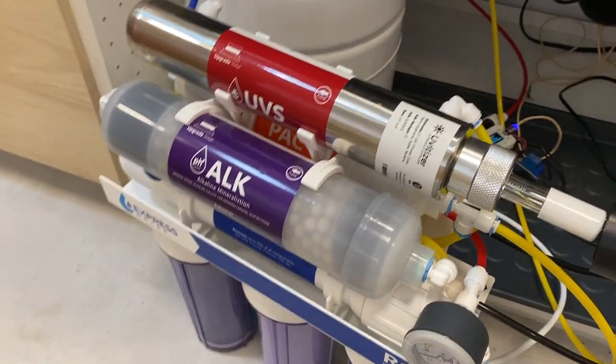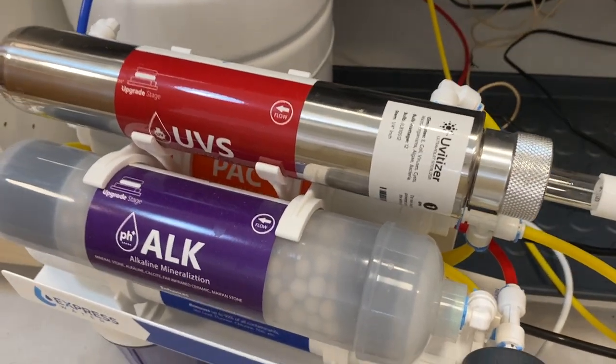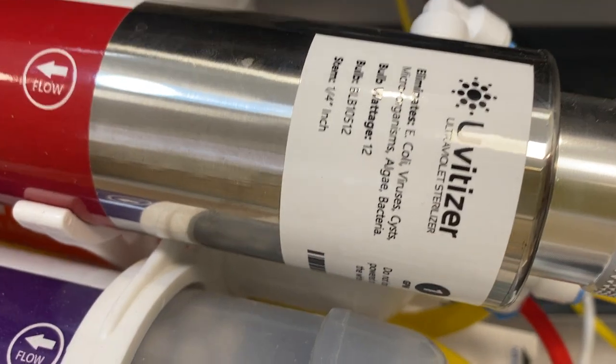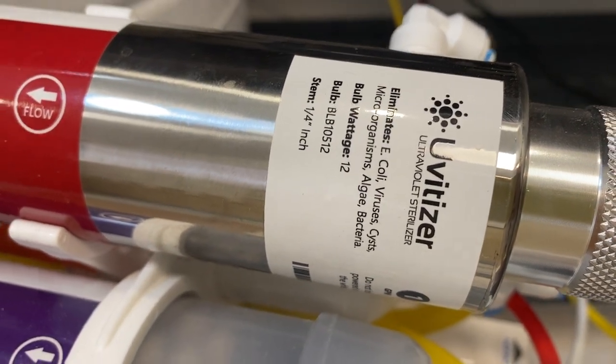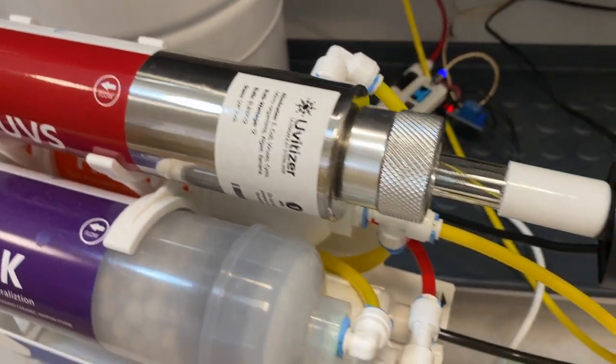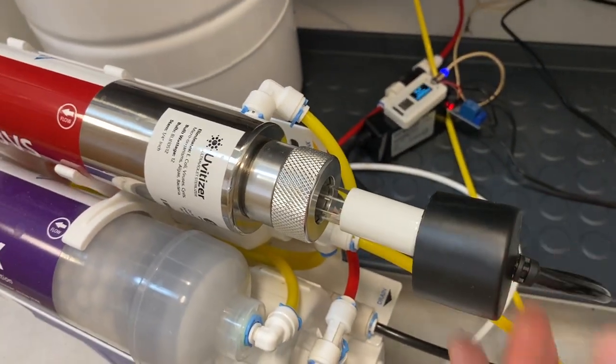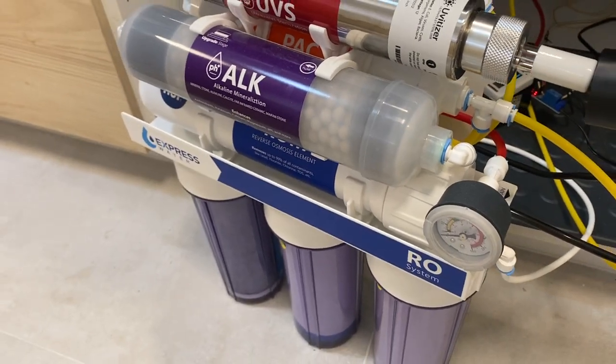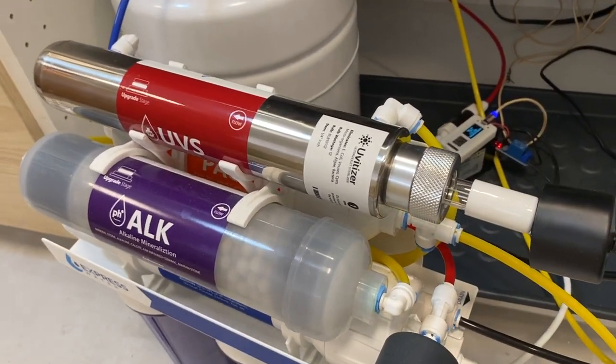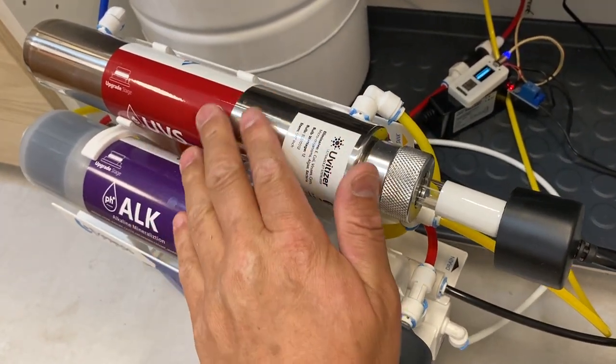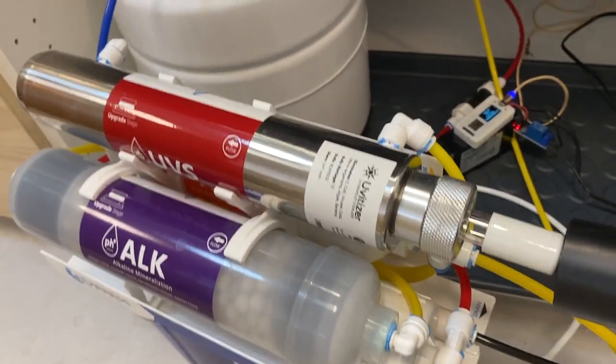It's called Water Flow Control UV Light. So this is my water filter. It has a UV light that kills E. coli, viruses, all kinds of microorganisms. So this UV light is here, but with this water filter, the UV light is always on. So it's really hot here and always on.